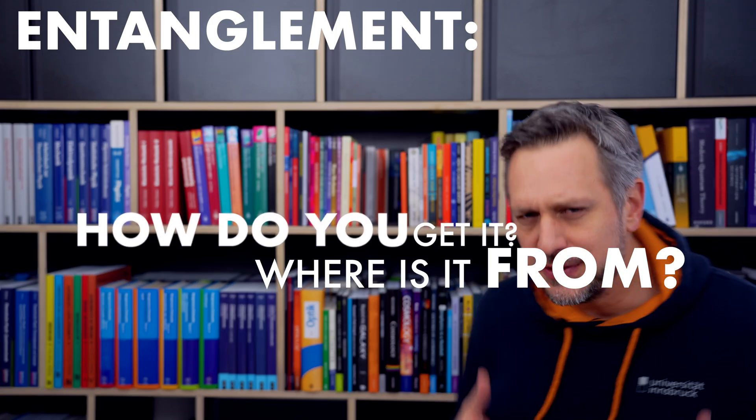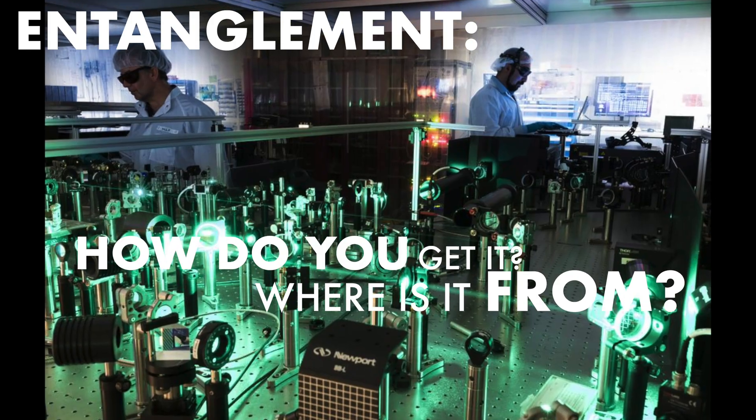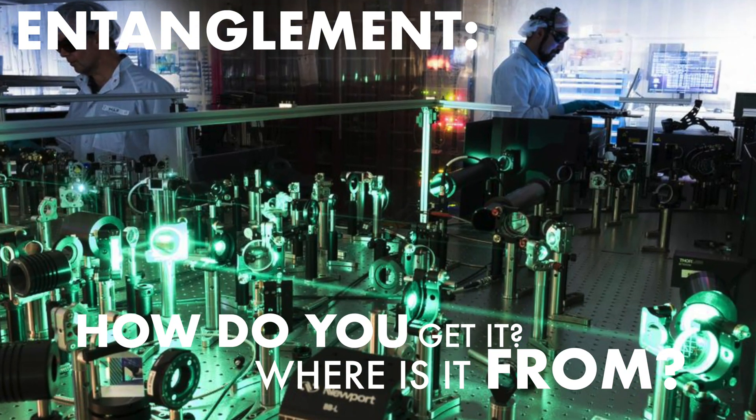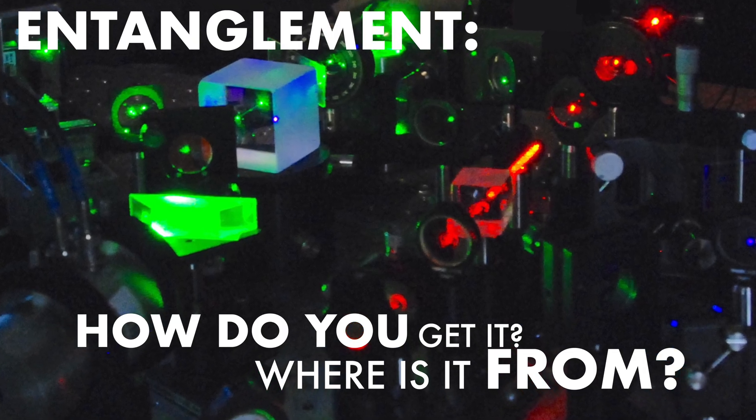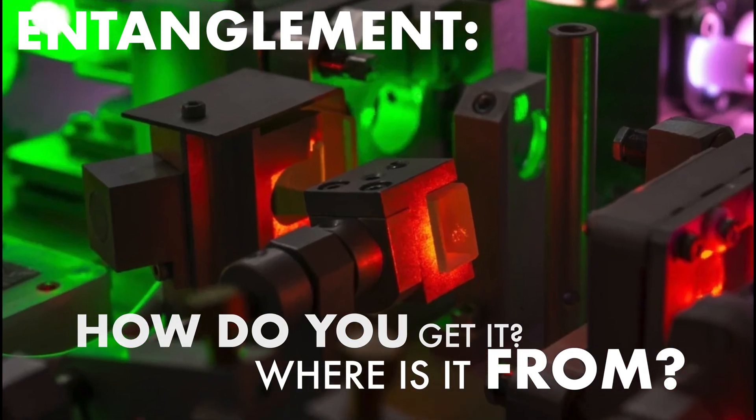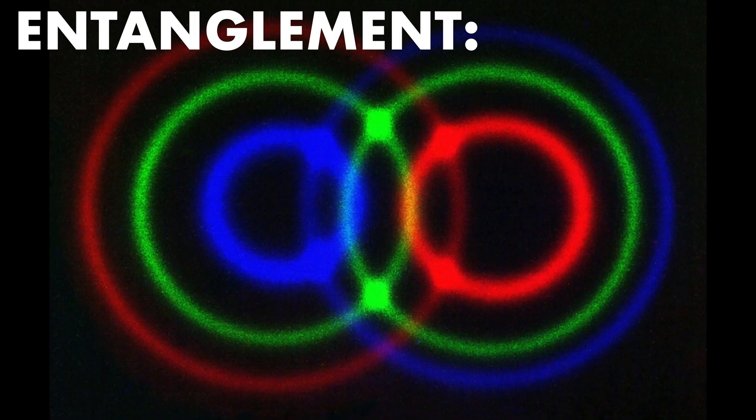But one frequent question people have about it is, where is it from and how do you get it in the first place? The answer is that you can create entanglement in a lab, and in this video we will look into exactly how that works, and also what it has to do with these rings of light. Because by understanding how it is created, we also gain a better understanding of what it really is.